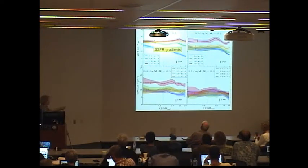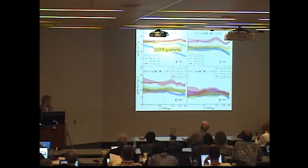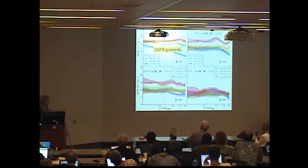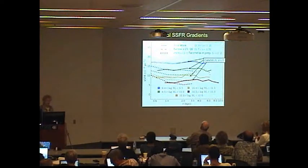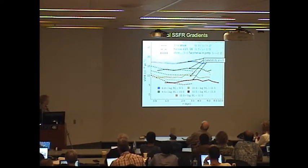We do that as a function of radius, and this is what the gradients look like. These are different masses at different red shifts. There's one aberrant curve here, but everybody else is flat. And that's the takeaway message I want you to remember, is that specific star formation rate gradients within the errors are flat.